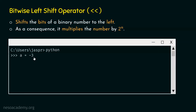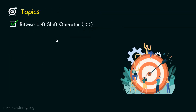Let's open the command prompt to verify. We set a to minus 3 and hit enter. We type a left shift 1 and get minus 6. Then a left shift 2 gives minus 12. The results are verified. With this, we are done with this lecture. The most important thing to remember is that the bitwise left shift operator multiplies the number by 2 to the power n, while the bitwise right shift operator divides the number by 2 to the power n. Thank you for watching. See you in the next one.